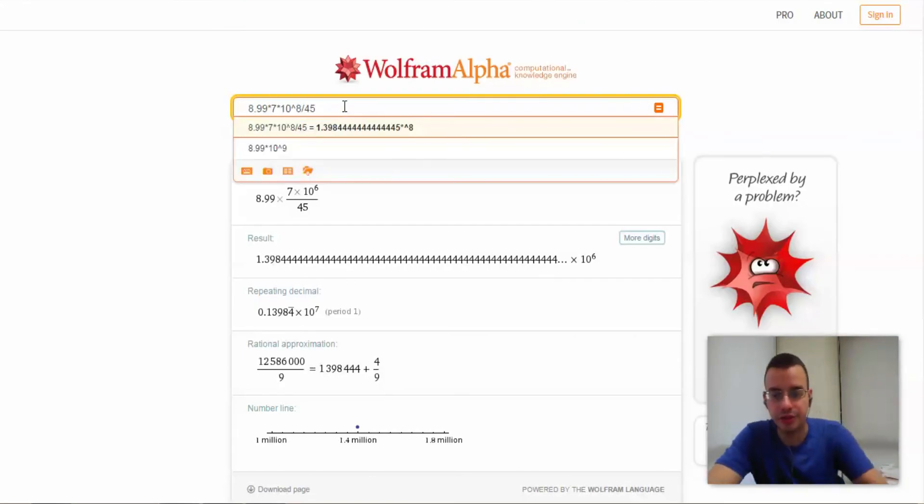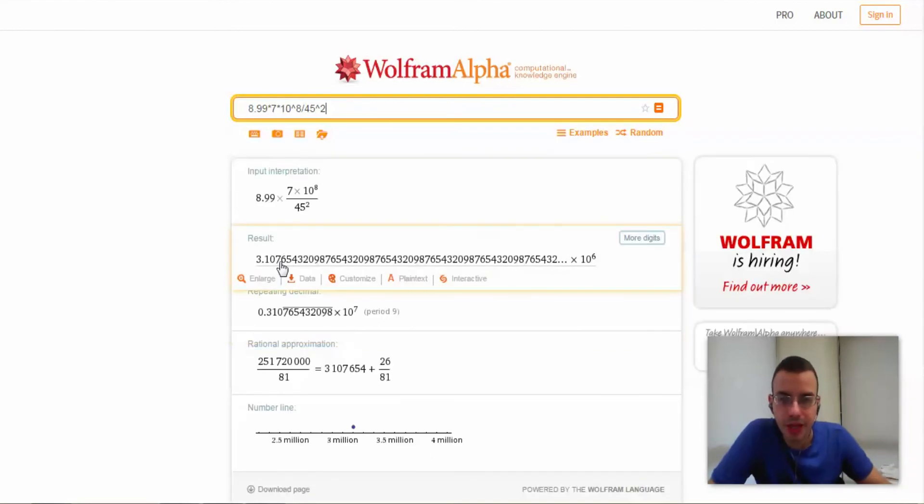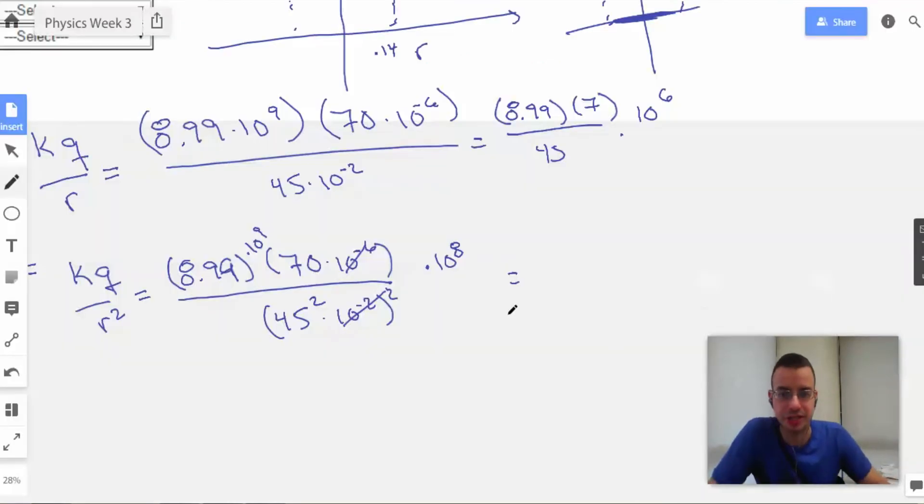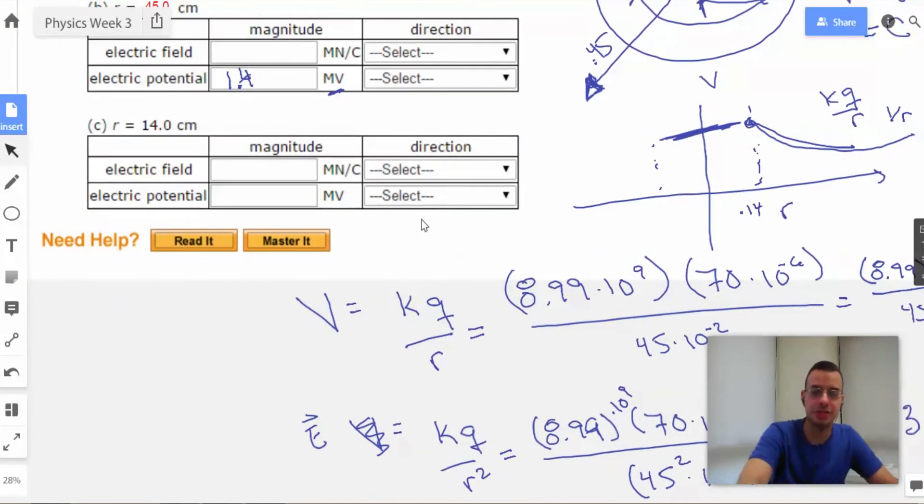And we get 3.11 times 10 to the 6th. And that is electric fields. That would be newtons per coulomb.